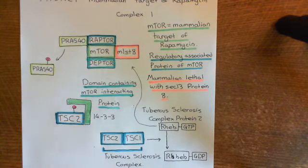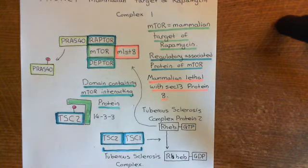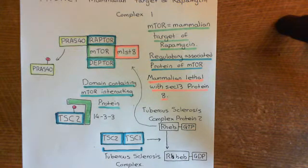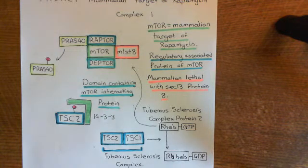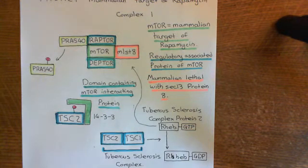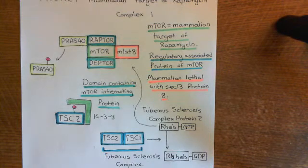Therefore, you will not get differentiation of your T cell into its mature T cell form, and you will not then get proliferation. So you will completely block T cell activation, and thereby you stop all three of those branches of the immune system that we looked at, because all of them require the activation of T cells at some point.